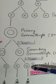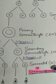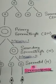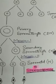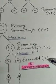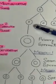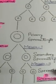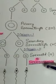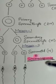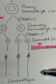Meiosis II forms two haploid spermatids. Each spermatid contains 23 chromosomes. Primary spermatocytes contain 46 chromosomes, secondary spermatocytes contain 23 chromosomes, and spermatids also contain 23 chromosomes. So each diploid spermatogonium produces four haploid spermatids.